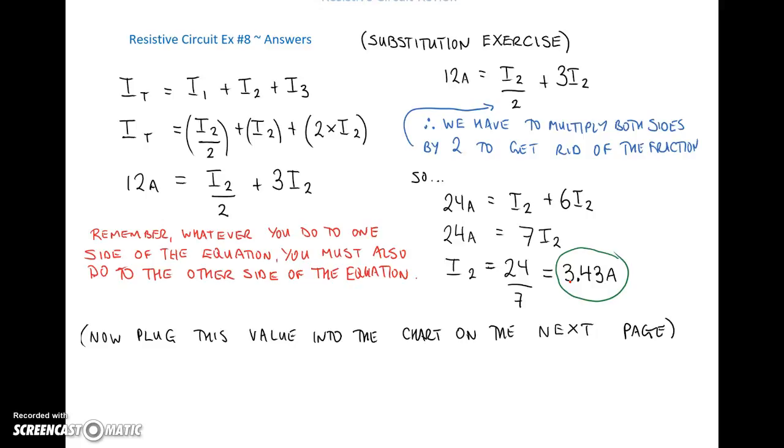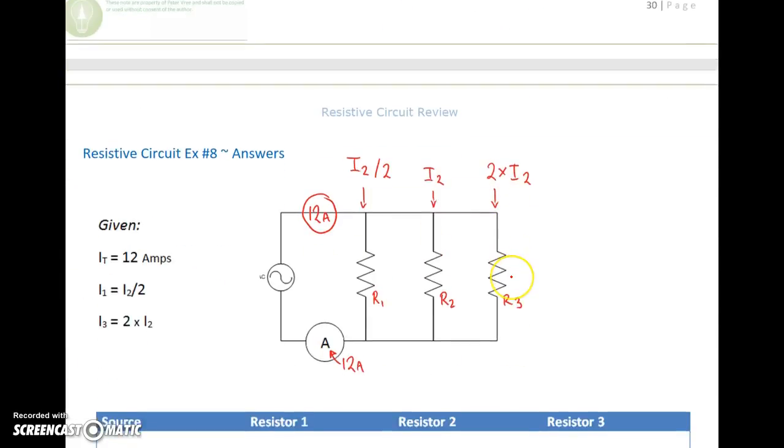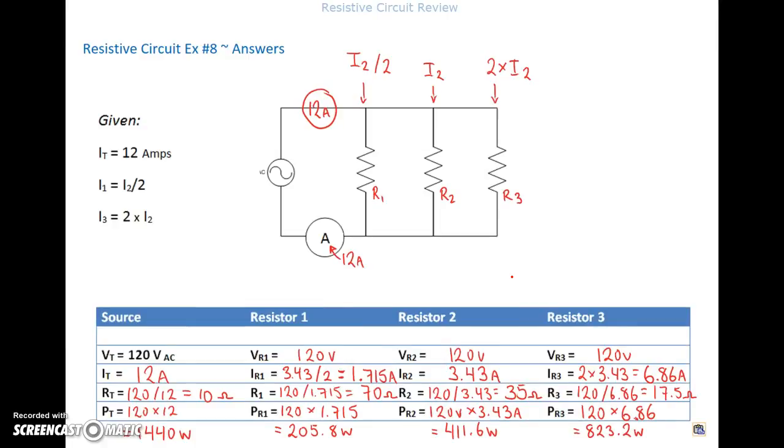So the second current is 3.43 amps. Now when we drop that into our chart below, we've got the 3.43 amps. And we've got the 120 that goes across everything because it's a parallel circuit. And now we can find all of the values for the circuit. Let's start over here on the right-hand side. So we have double 3.43, so 2 times the second current giving me 6.86. There's 120 volts across that resistor. So 120 divided by 6.86 gives me 17.5 ohms. The heat that's coming off of this third resistor would be the voltage, 120, times the current of 6.86, giving me a wattage of 823.2 watts.